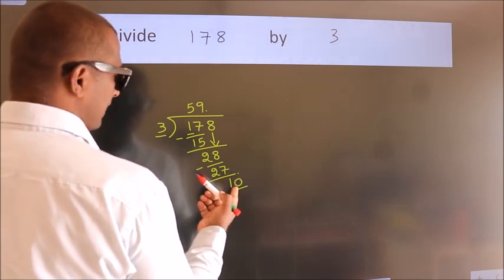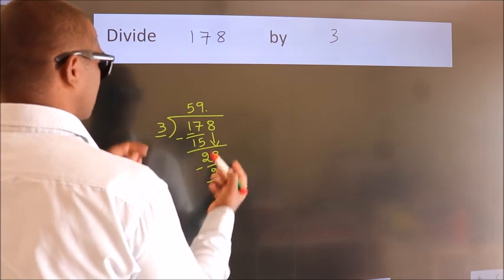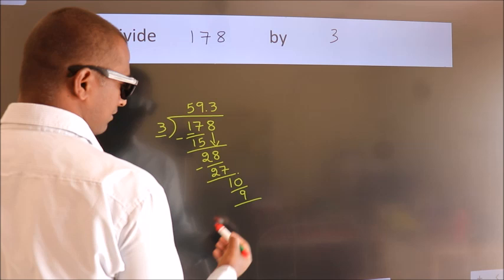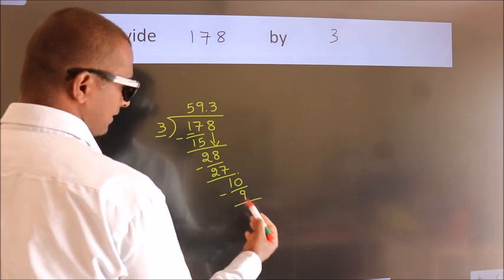A number close to 10 in the 3 table is 3 threes, 9. Now we subtract. We get 1.